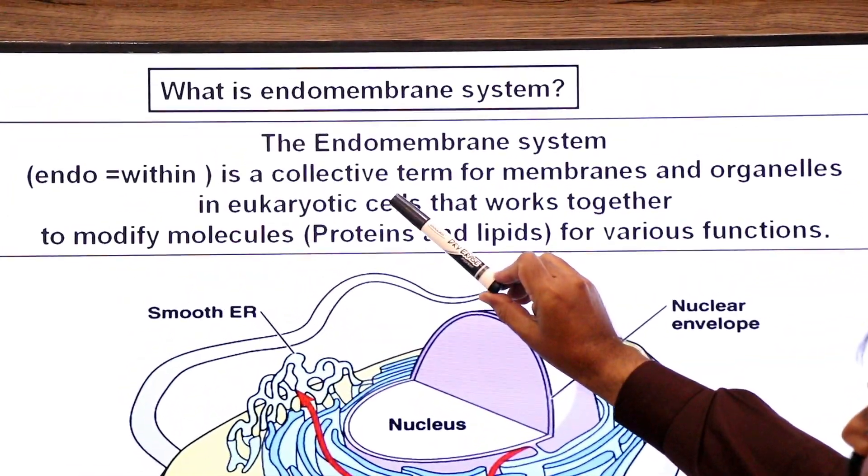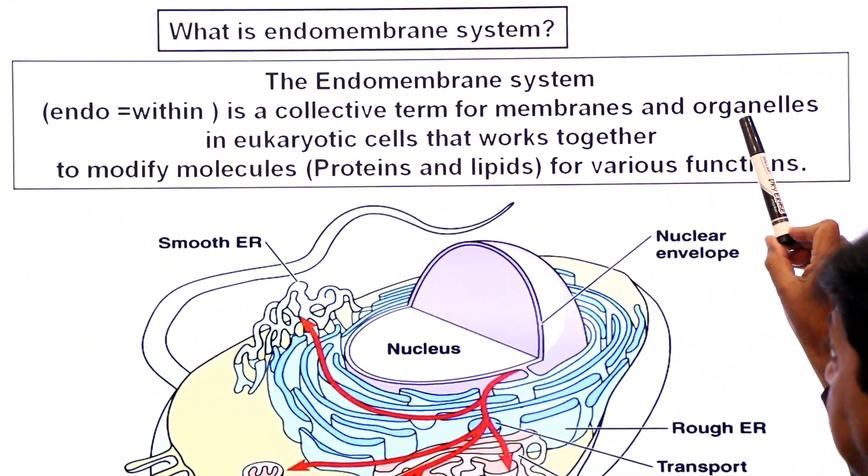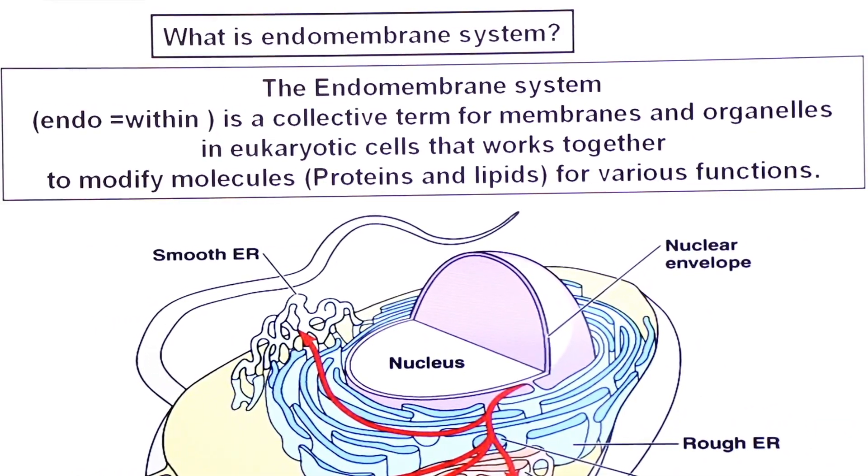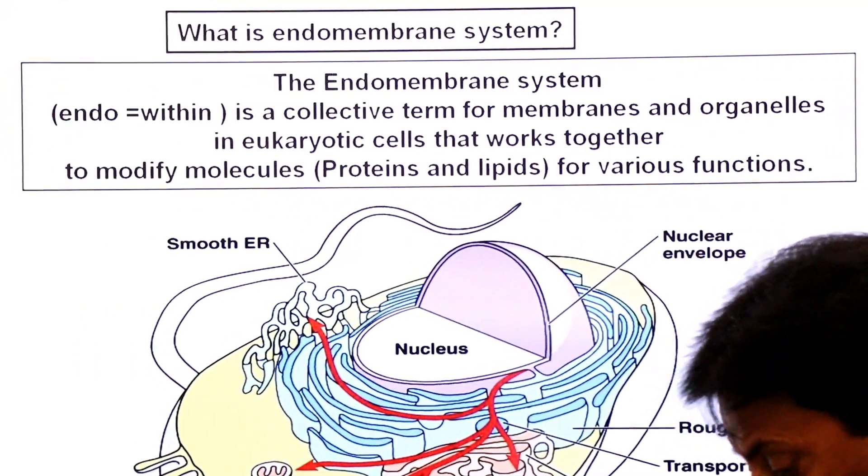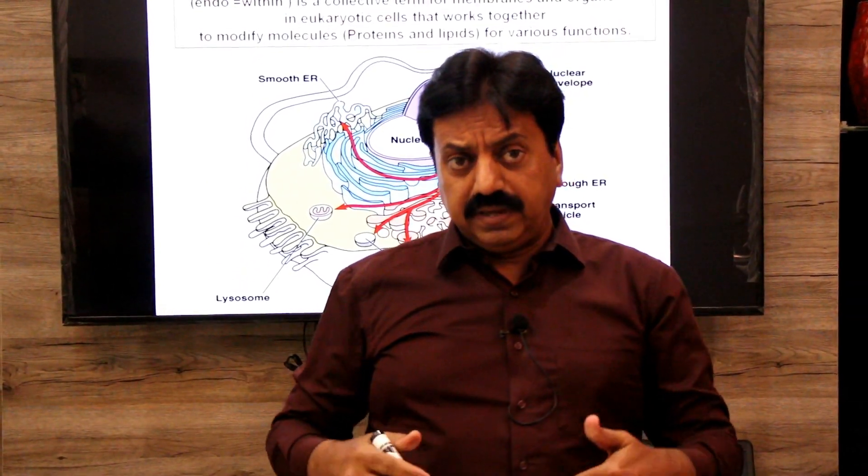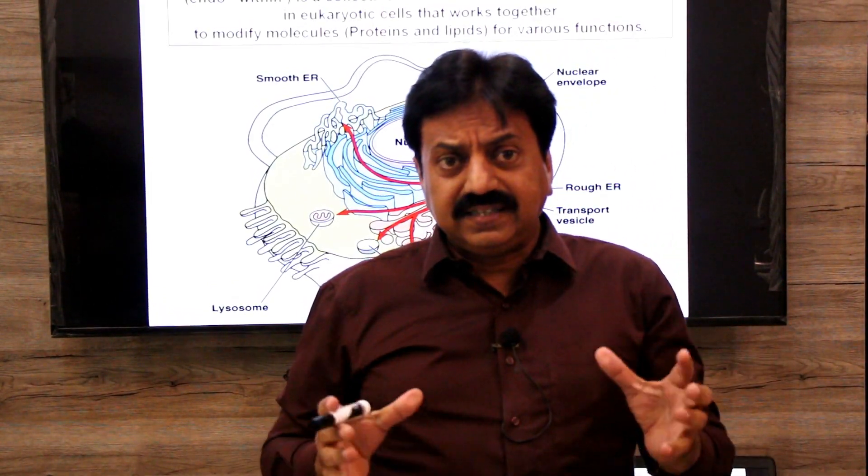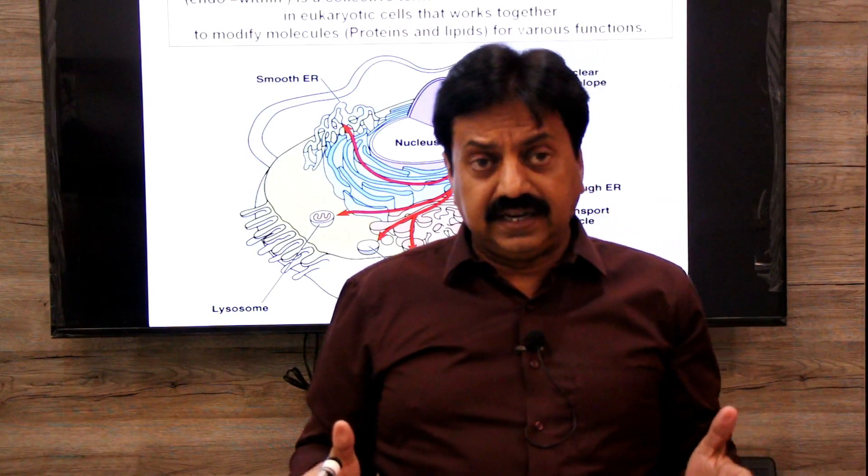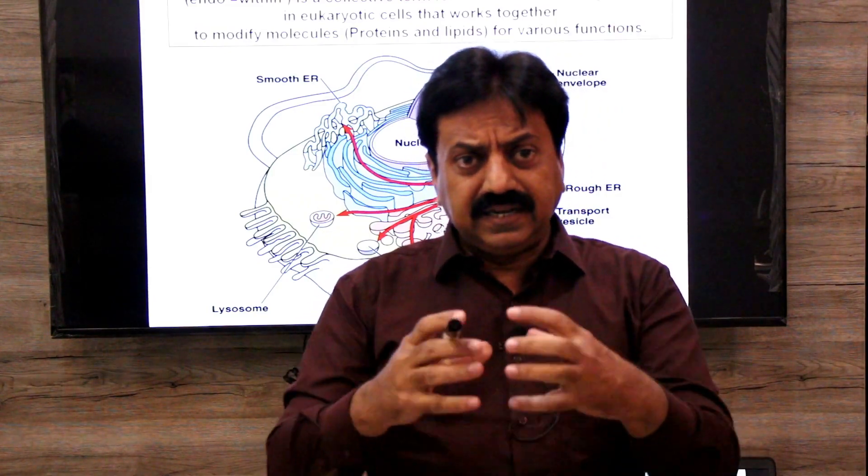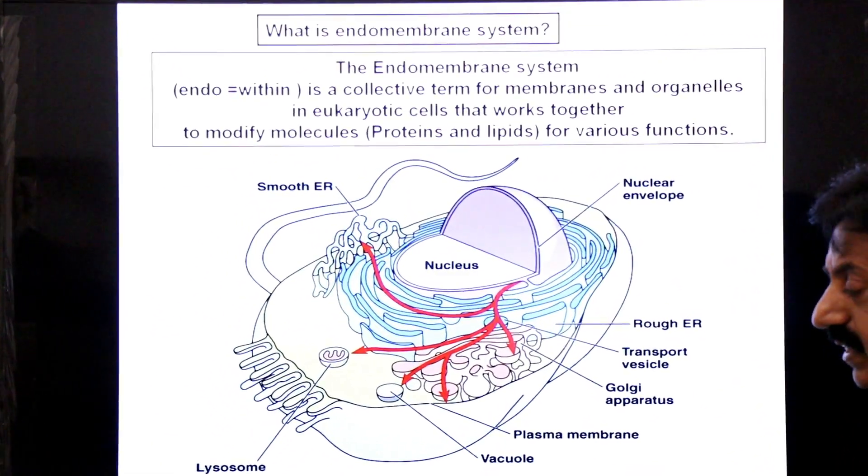The endomembrane system, endo means within, is a collective term for membranes and organelles in eukaryotic cell that works together to modify molecules, proteins and lipids for various functions. Dear students, this term endomembrane system includes two membranes: nuclear membrane and plasma membrane. With these membranes, some organelles, membrane bounded organelles, are associated. Which ones? Endoplasmic reticulum, Golgi bodies, lysosomes, vacuoles. These together form the endomembrane system. Focus on the slide and take screenshot, dear students.